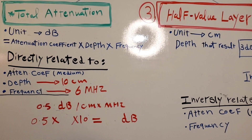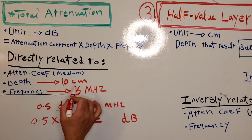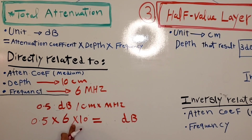Now changing the frequency to 6 megahertz with the same depth of 10 centimeters, and still assuming soft tissue with attenuation coefficient 0.5. Multiply 0.5 by 6 by 10 — 6 times 10 equals 60, and half of 60 is 30 decibels. So the total attenuation is 30 decibels.